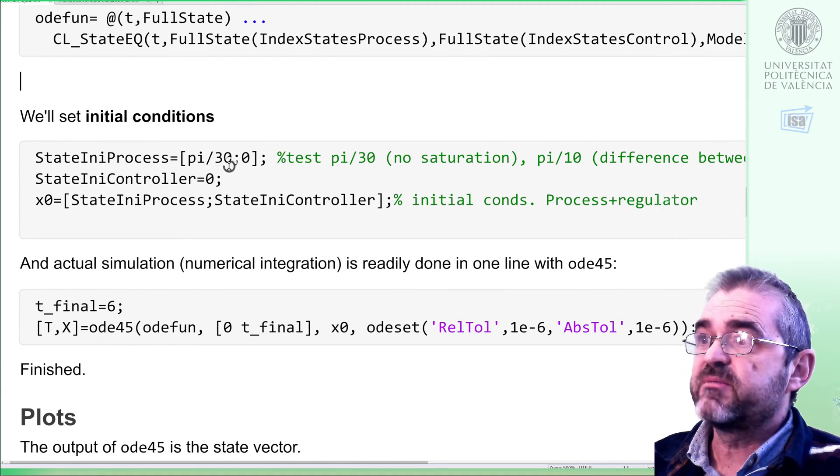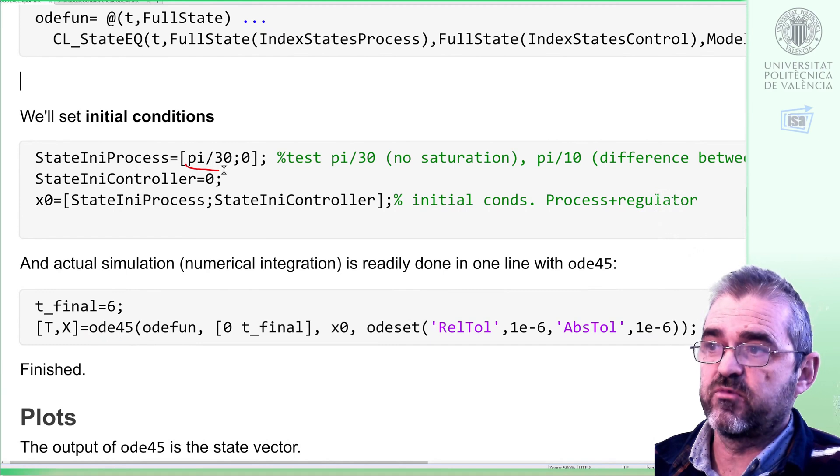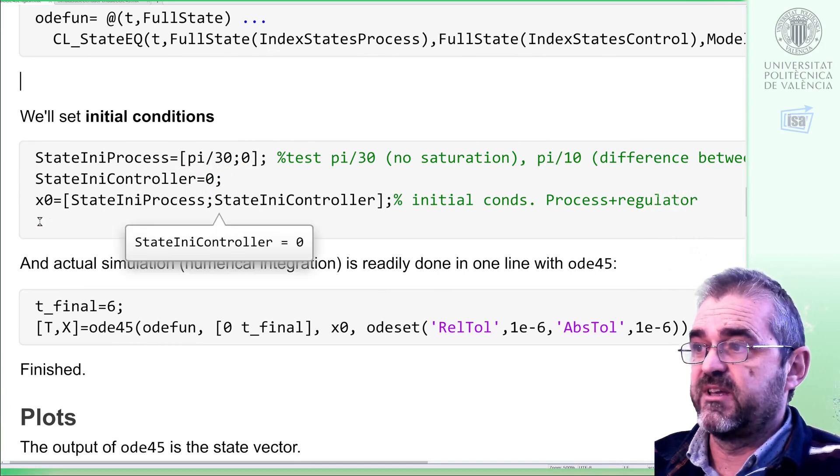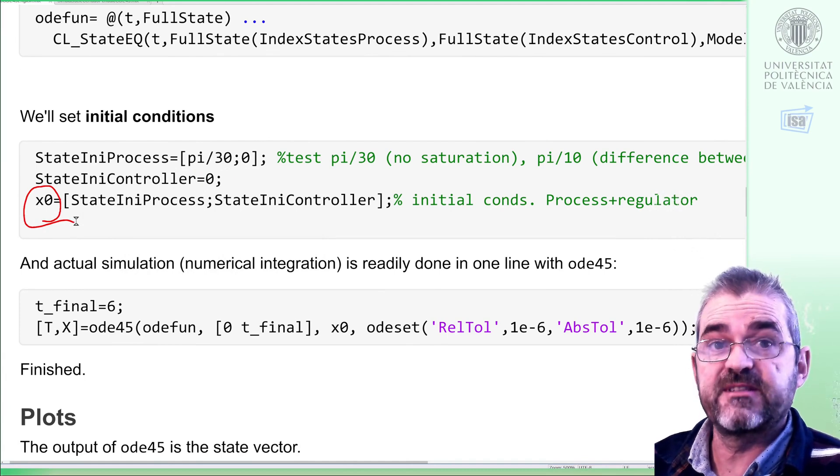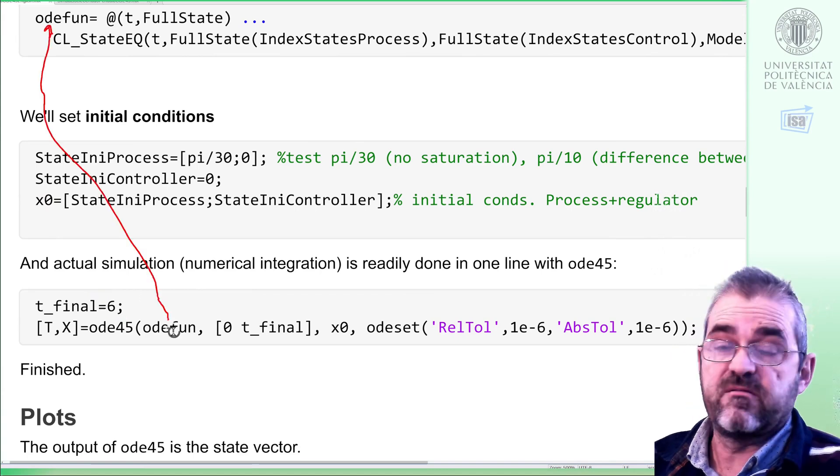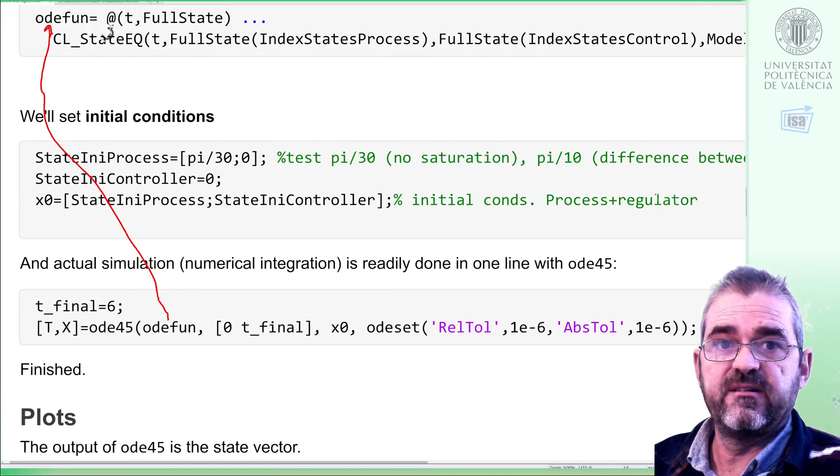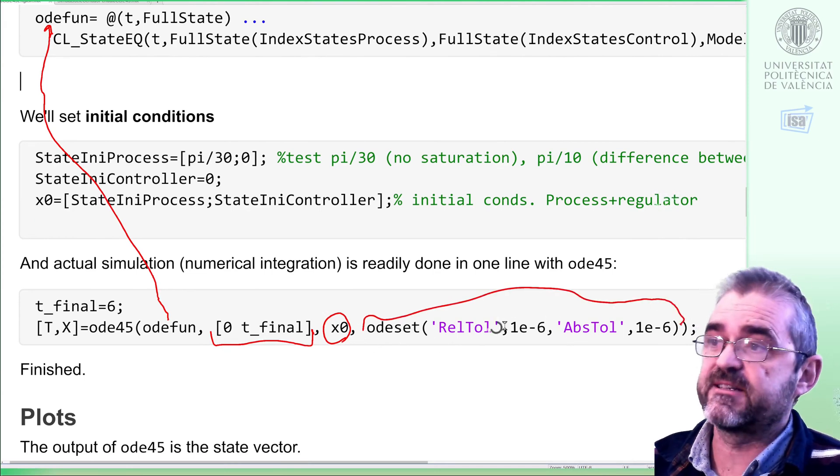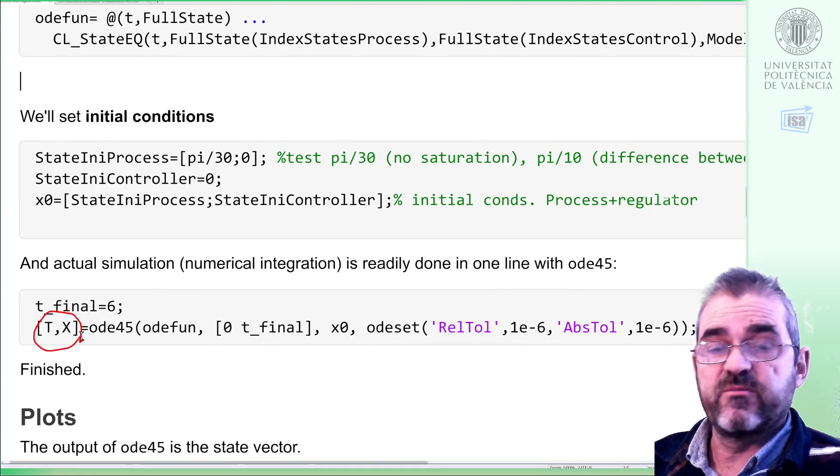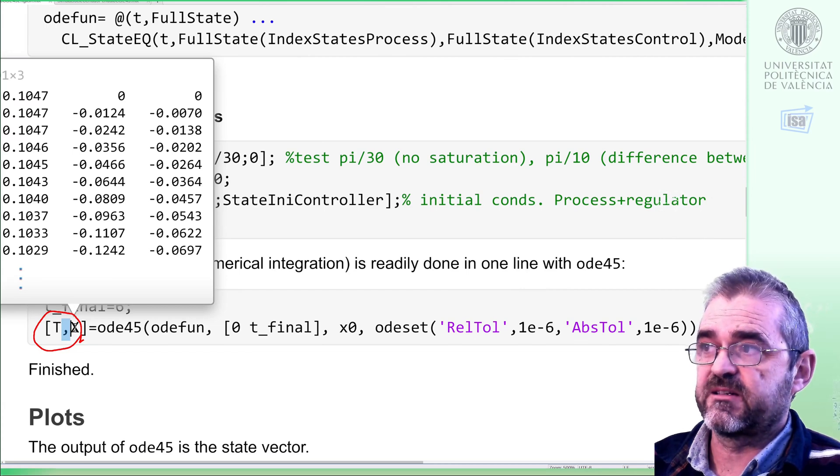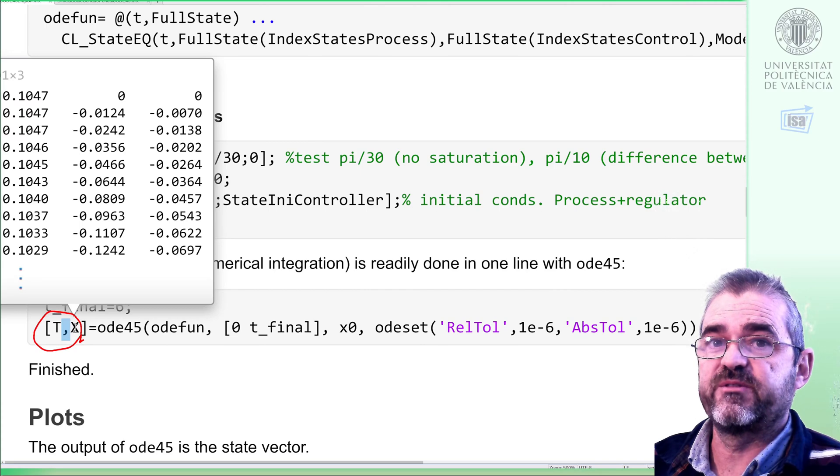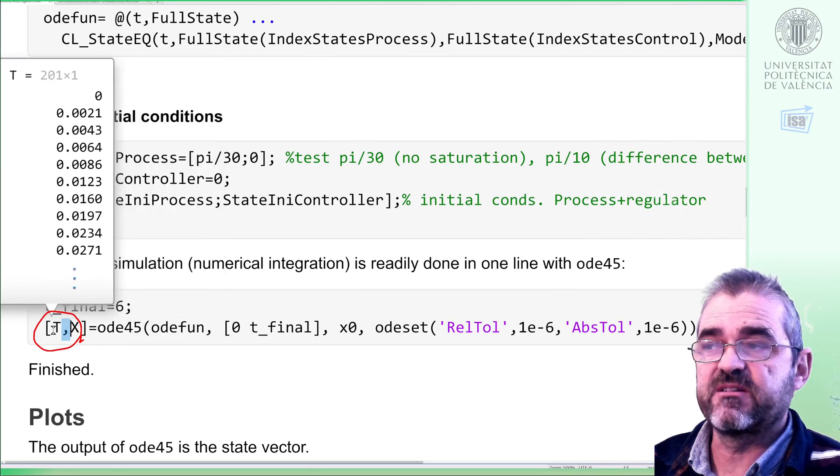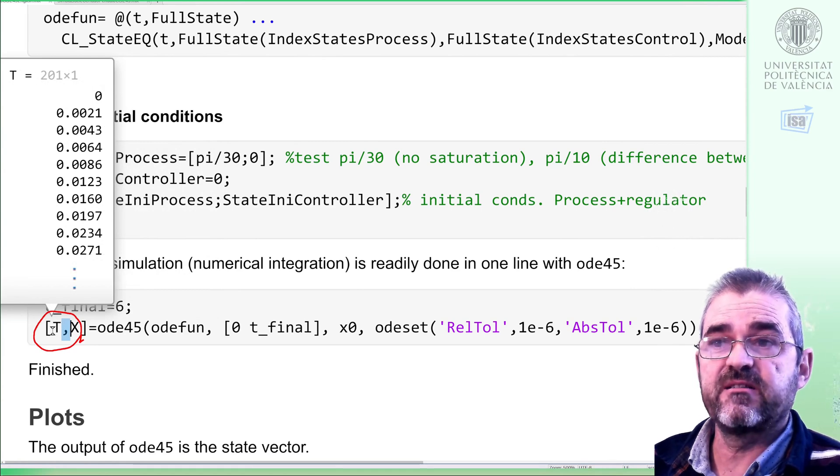For instance, we can set up initial conditions for the pendulum states: position pi over 30, let's say, and zero speed, and the initial condition for the controller set to zero. So x0 will be the initial condition of the joint plant plus controller state vector. I simulate six seconds. The derivative of the overall state vector is this ODFUN. This is the simulation starting and finish time, initial condition, and any desired options such as tolerances. If we execute, we will get a set of simulation times and states. In this case, for instance, it has output three states: two first columns correspond to the pendulum states, third column to the controller state, at 201 time instances. Step size depends on how things are changing at the particular instance and the desired accuracy.